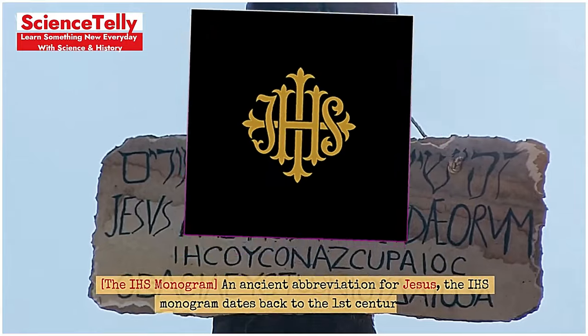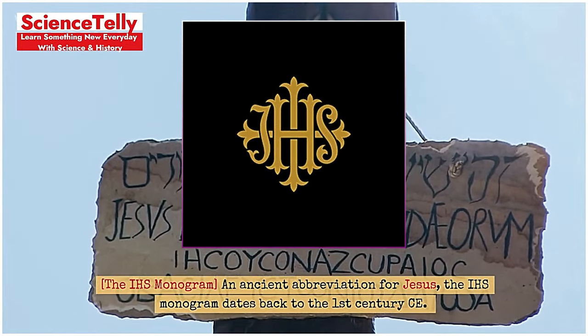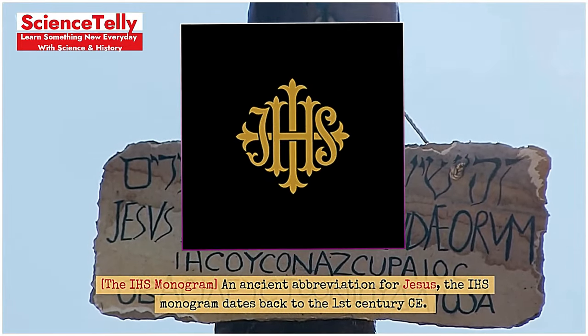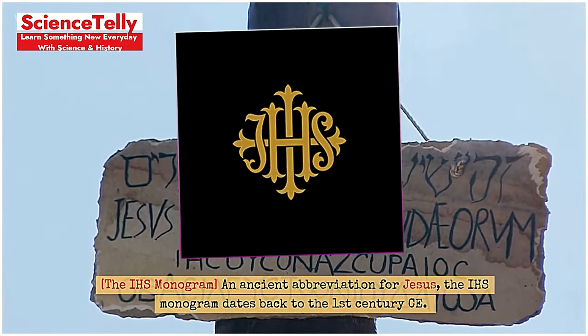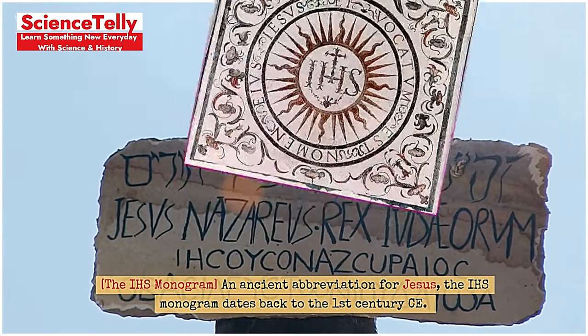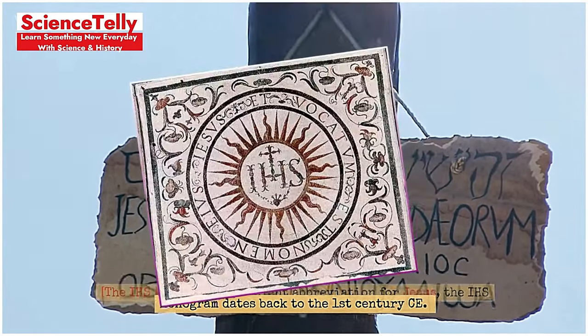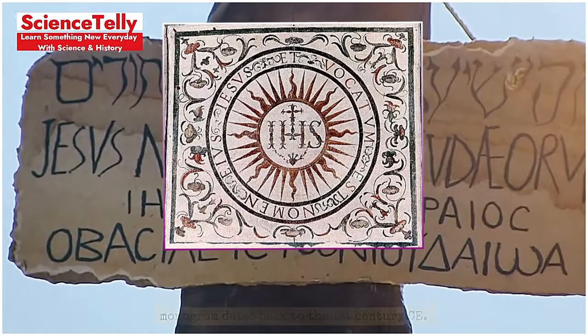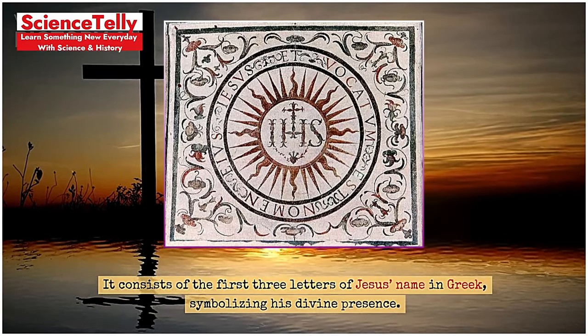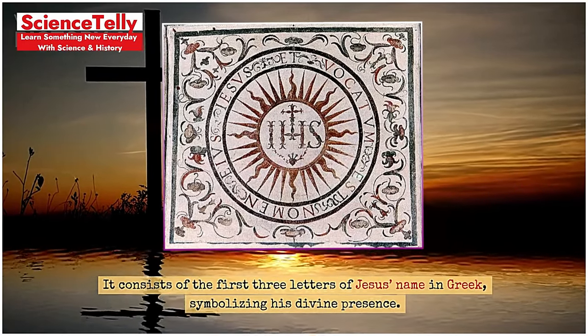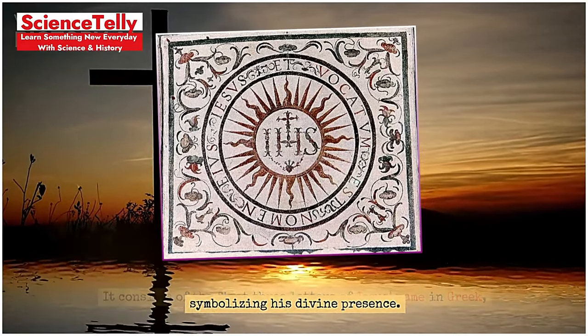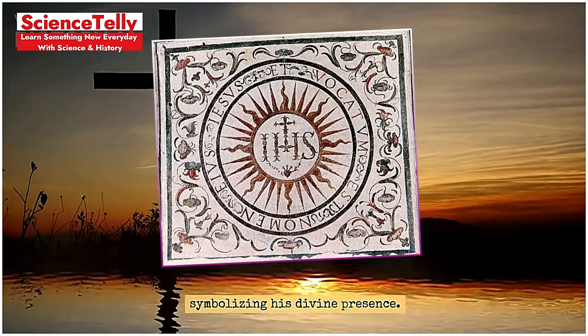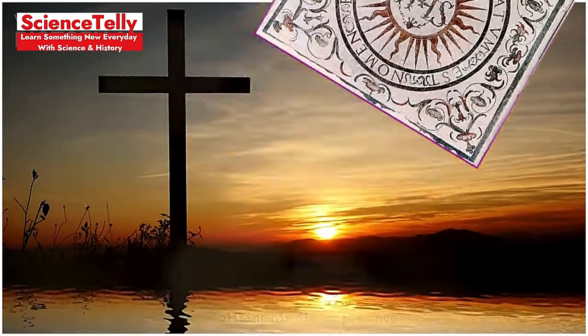The IHS monogram is an ancient abbreviation for Jesus, dating back to the 1st century CE. It consists of the first three letters of Jesus's name in Greek, symbolizing his divine presence.